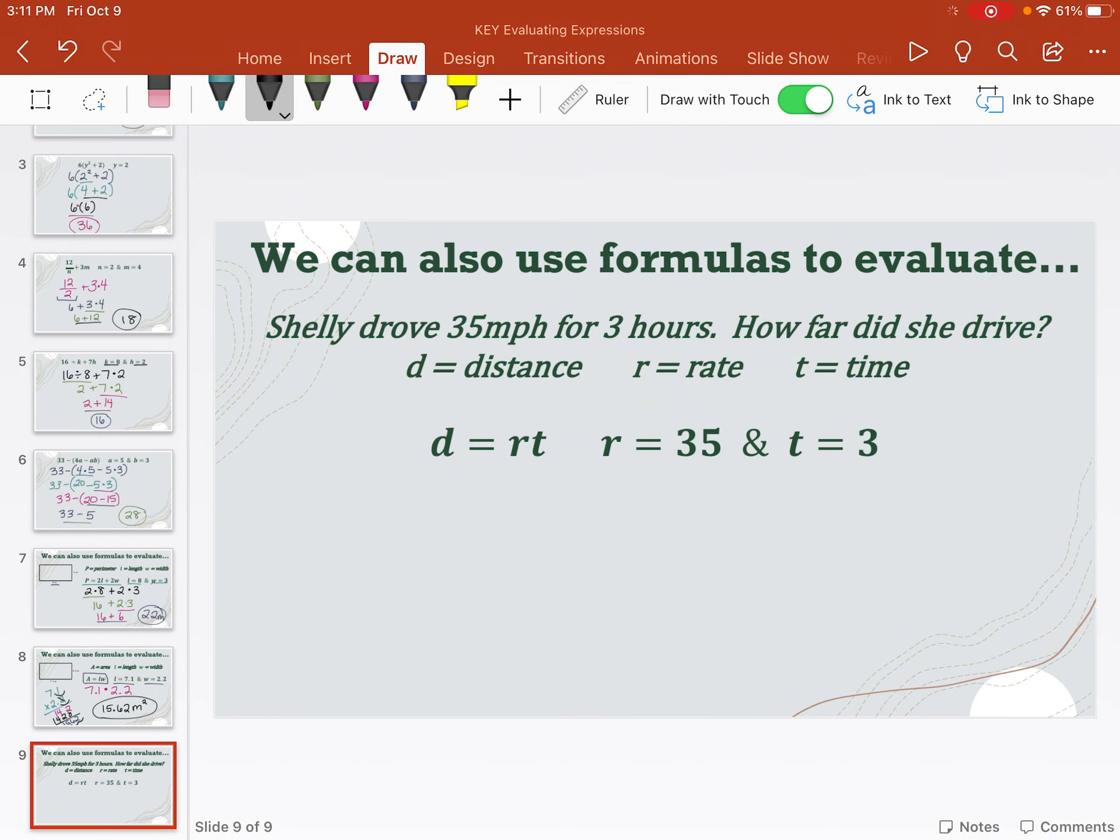And we have one last formula to use. So they gave us D equals RT. So what this really means is distance equals rate times time. But it doesn't matter if you understand that because, again, they gave us just, if I hadn't told you all those words up above, it's just like what we did on all those first couple slides. So you're just going to substitute in and solve. They did give us a word problem here to go with it. But again, it doesn't really matter. But it says, Shelly drove 35 miles per hour for three hours. How far did she drive? So we're trying to figure out her distance. So we know the rate, we know the time, or the R and the T. So we're just going to substitute it in again.